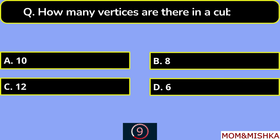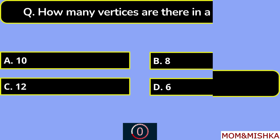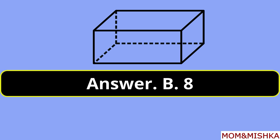How many vertices are there in a cuboid? There are 8 vertices. Option B.